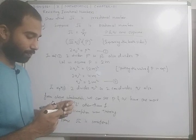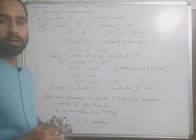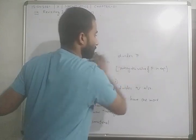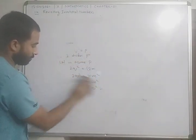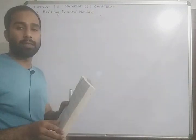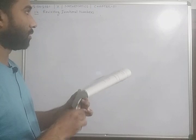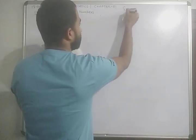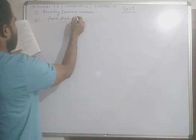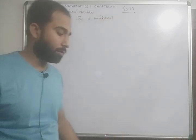So let's see another part from the exercise. You can pause the video and write down all these things. In your NCERT textbook, Exercise 1.3, Question number 1 says: Prove that under root 5 is irrational. We will follow the same procedure to show this.